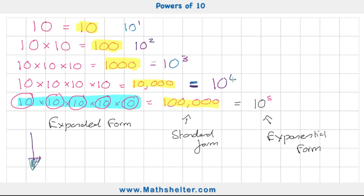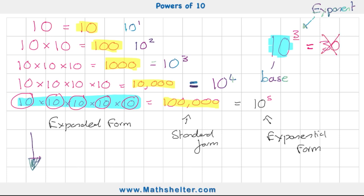Let's have a closer look at the exponential form. In 10 to the power of 3, the 10 is called the base and the 3 is called the exponent. The most common mistake people make is thinking 10 to the power of 3 means 10 times 3, giving an answer of 30 — that's wrong. What we're actually doing is expanding the 10 three times: 10 multiplied by 10 multiplied by 10, which equals 1000.